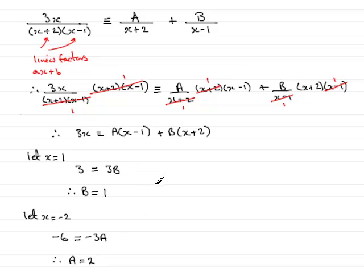So what I have now then is that I can say that from these results, that 3x all over (x+2)(x-1) is identical to the A value, which is 2, so that's 2 over (x+2).